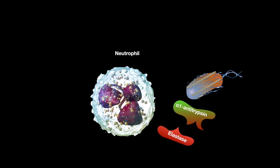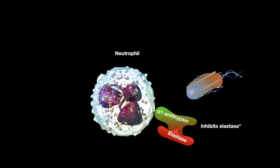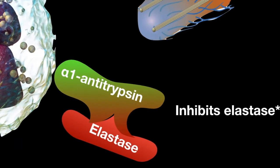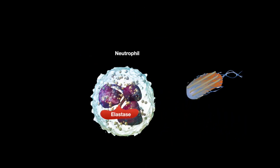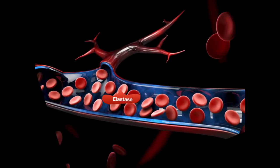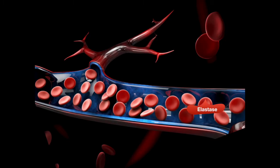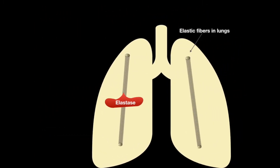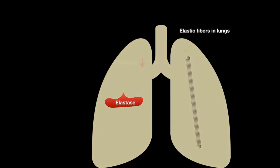Alpha-1-antitrypsin is a protein that inhibits elastase. If after an inflammation, alpha-1-antitrypsin is deficient, then elastase will continue to flow through the blood and end up in the lungs, where it breaks down elastic fibers. This reduces the elasticity of the lungs, causing COPD.